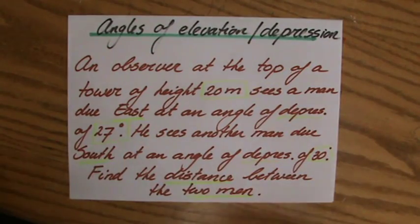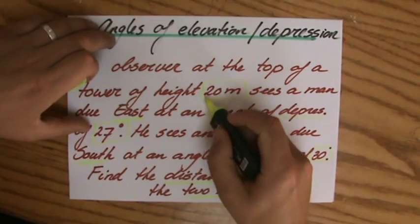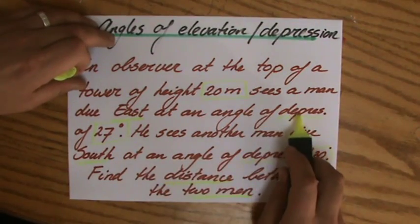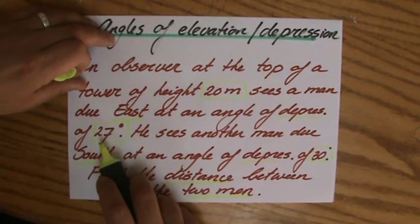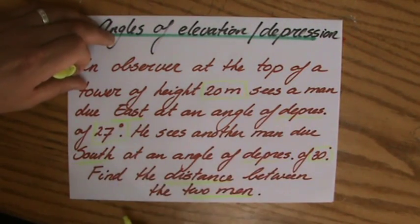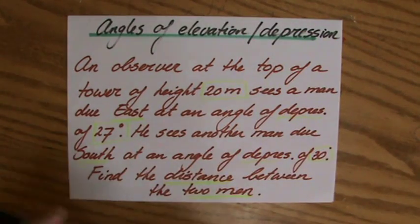He sees another man due south of him at an angle of depression of 30 degrees. Find the distance between the two men on the ground. Important information: the height of the tower, angles of depression 27 degrees due east and 30 degrees due south. We'll make a sketch because we're not going to do this mentally.